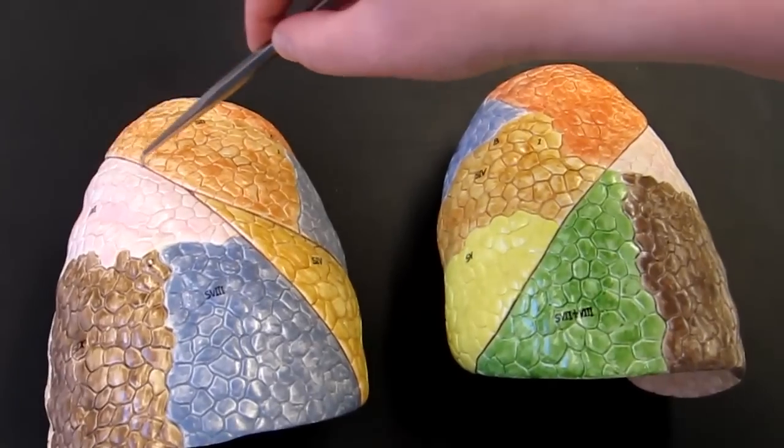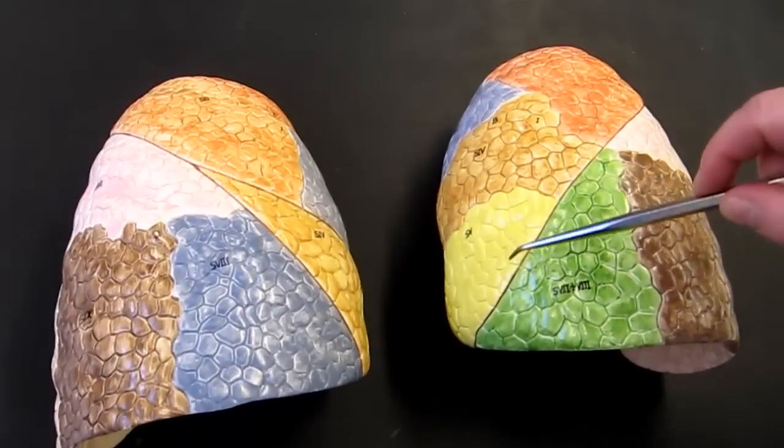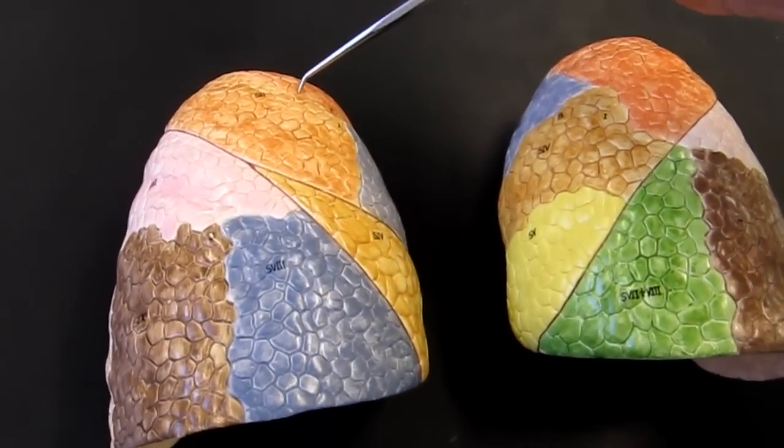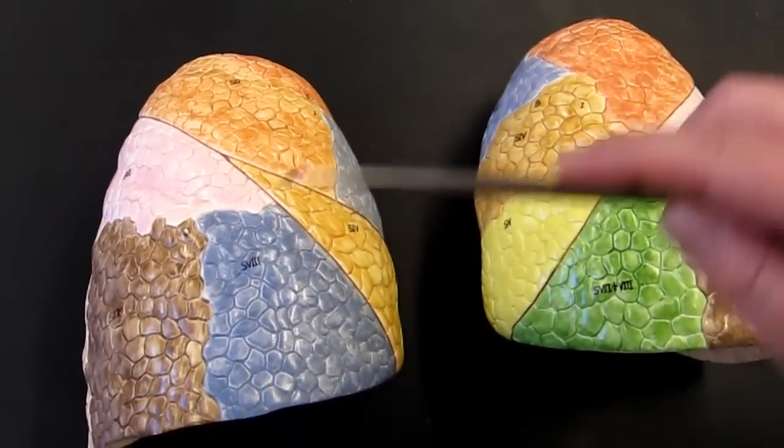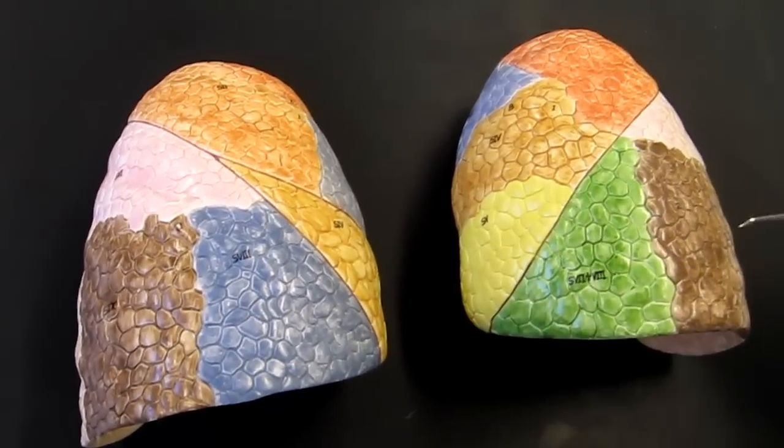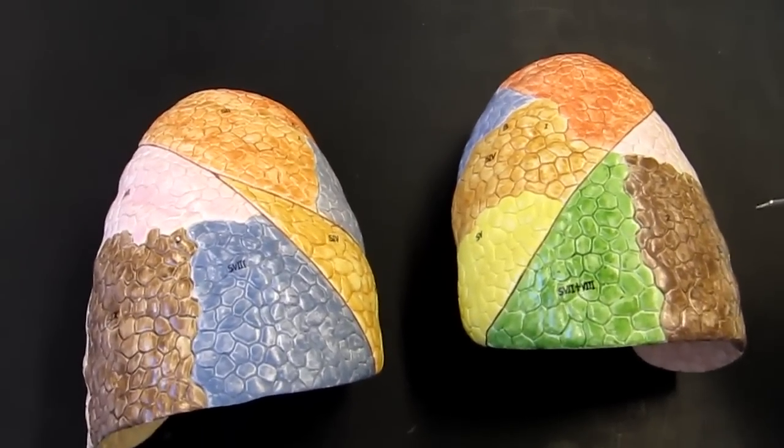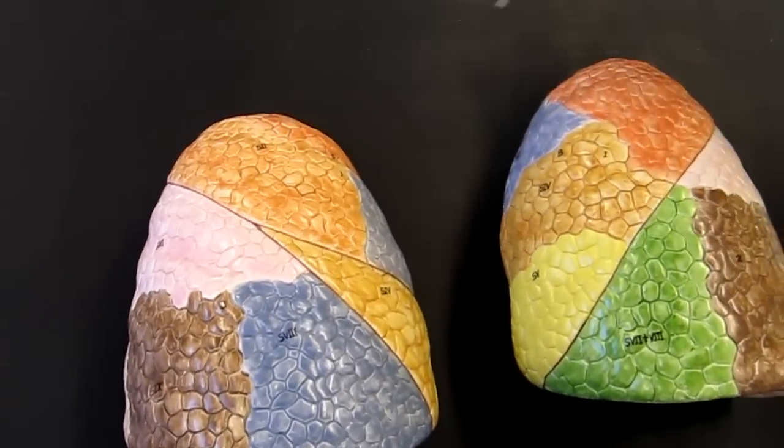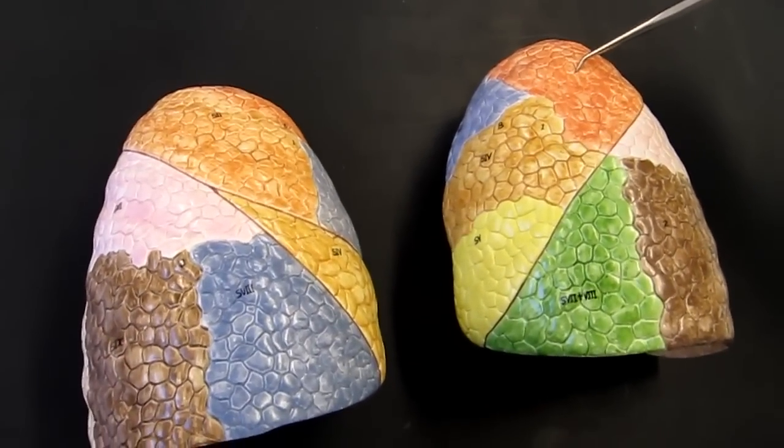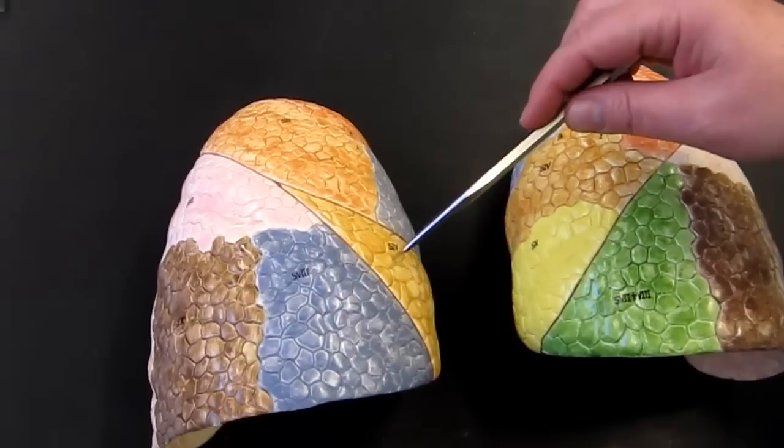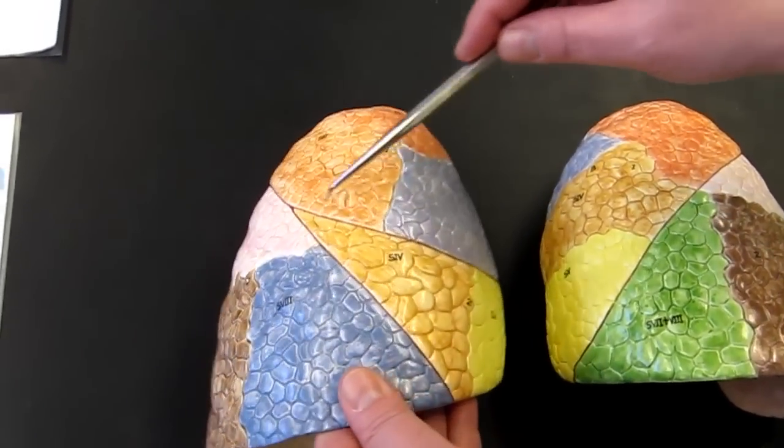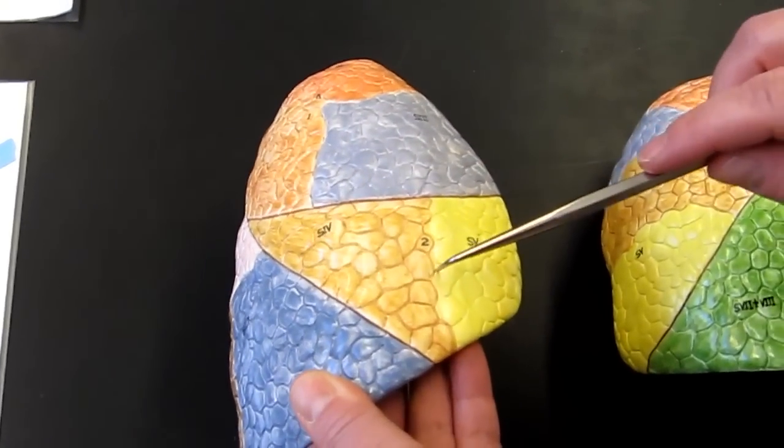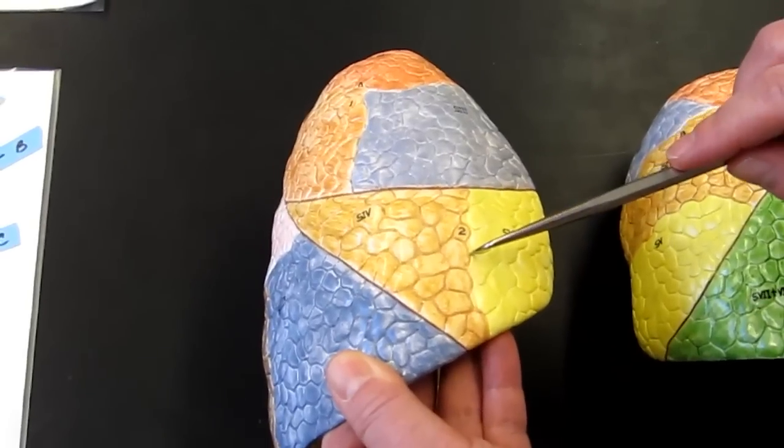Both lungs have an oblique fissure. And both lungs have a superior lobe, and both lungs have an inferior lobe. So because of that, you need to be careful about saying which lung you're on. So this would be the right superior lobe. This would be the left superior lobe, etc. Now since we have an extra lobe over here, we're going to have an extra fissure. The extra fissure that we have is the horizontal fissure. And the extra lobe that we have is the middle lobe.